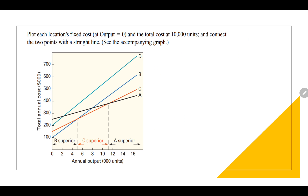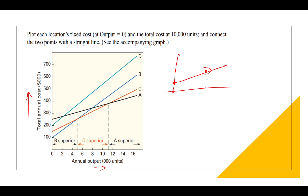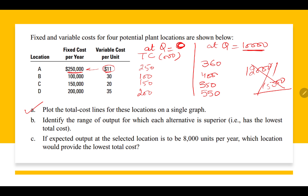We can now do the plotting on the graph. On the x-axis is annual output (quantity); on the y-axis is total cost. For all four locations, the total cost lines are plotted. For any location, you first plot at Q = 0, then at Q = 10,000, and join the two points to get the total cost line. That is how the graph is developed. The first part — plot the total cost line — is done.